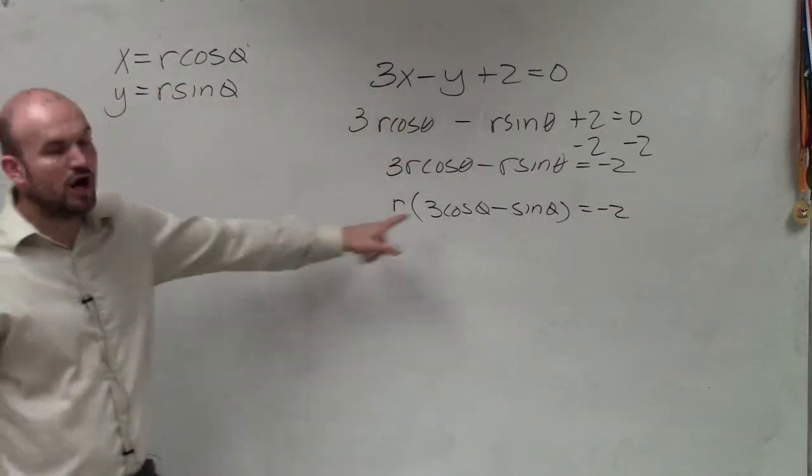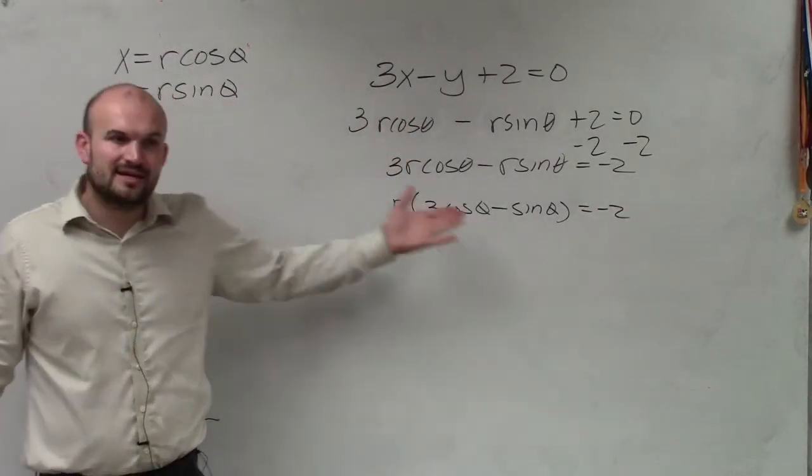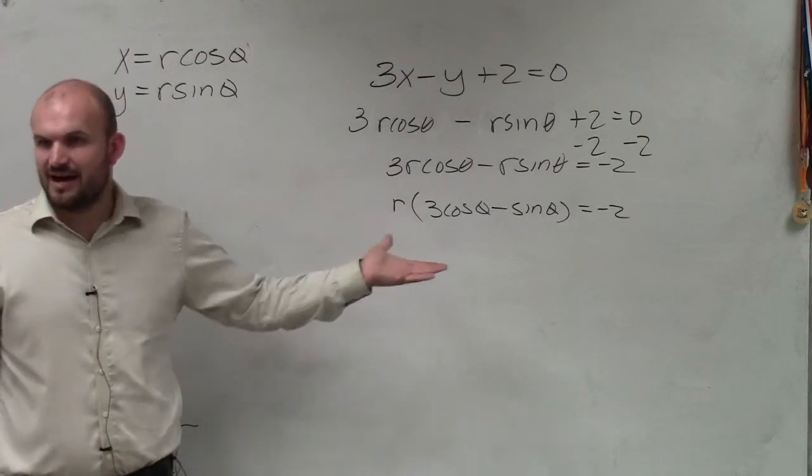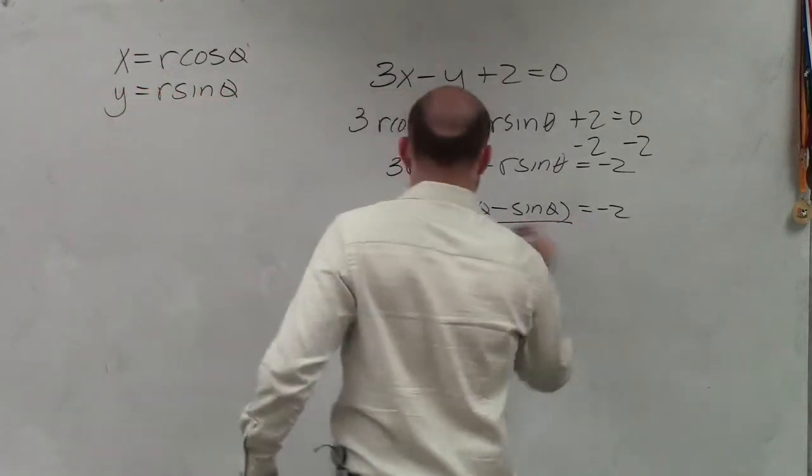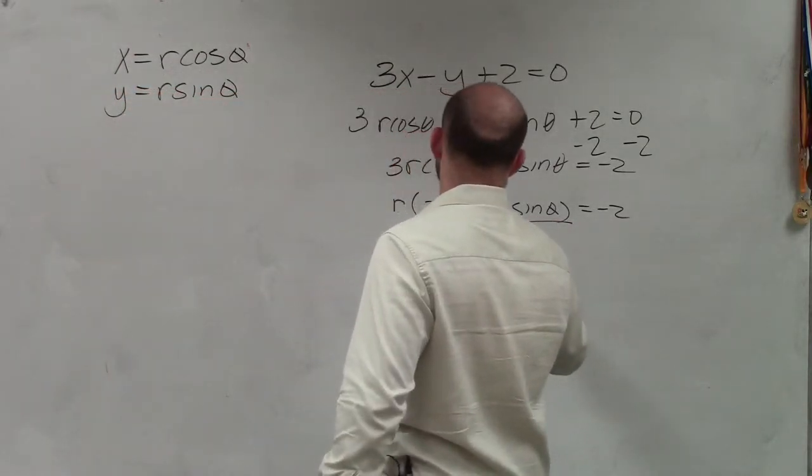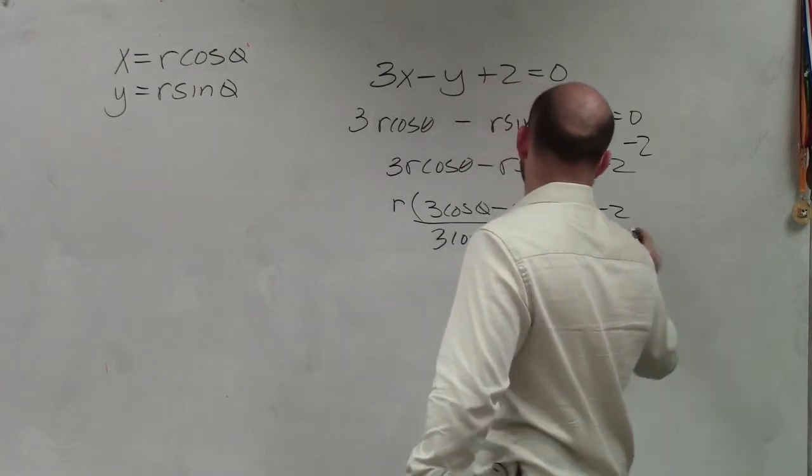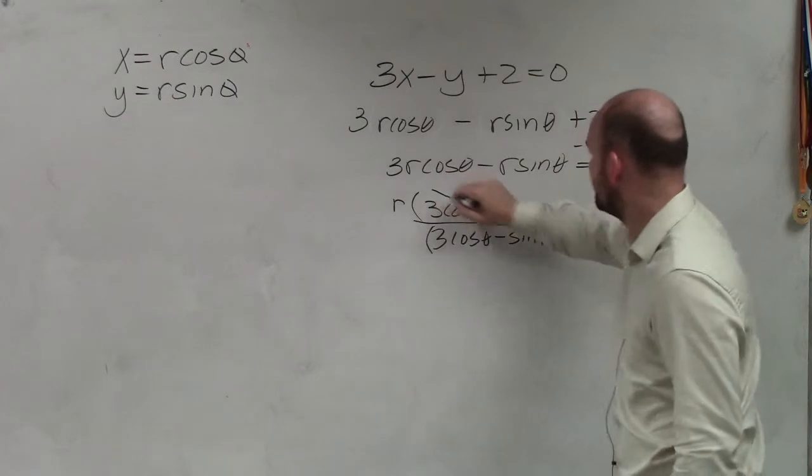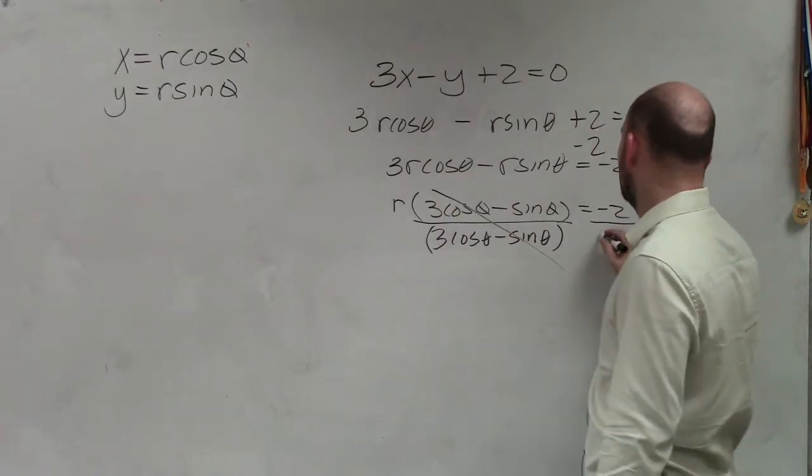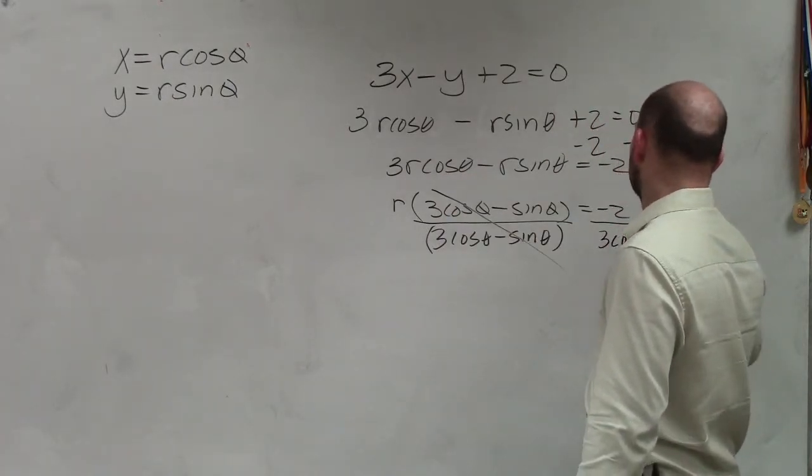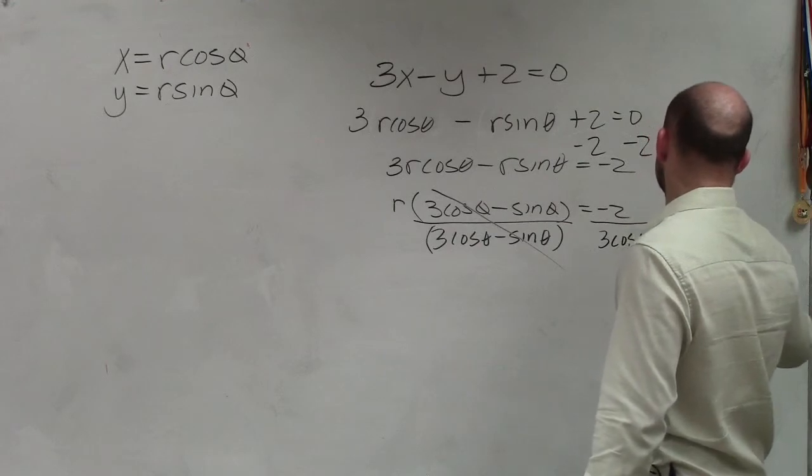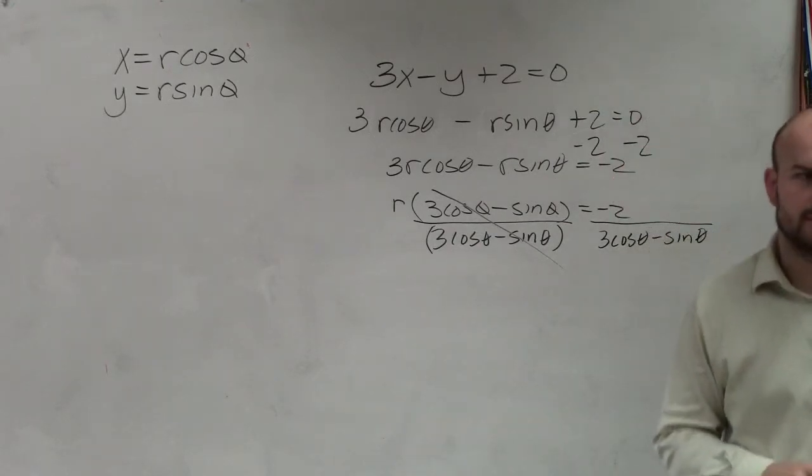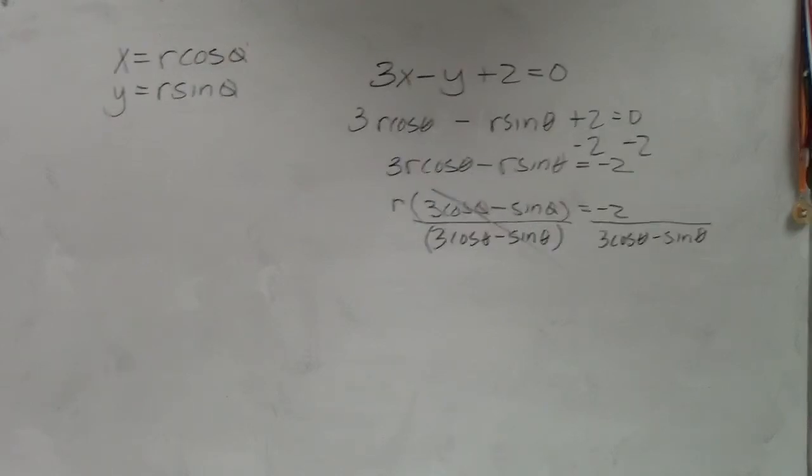So now I have r times this expression. To get r by itself, I just have to divide by that expression on both sides, because that expression divided by itself equals 1. And I'm left with r equals negative 2 over 3 cosine of theta minus sine of theta.